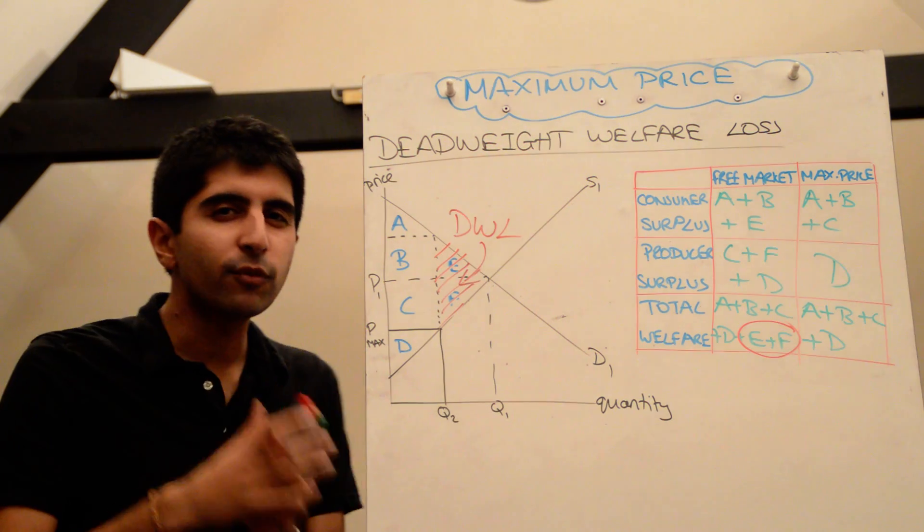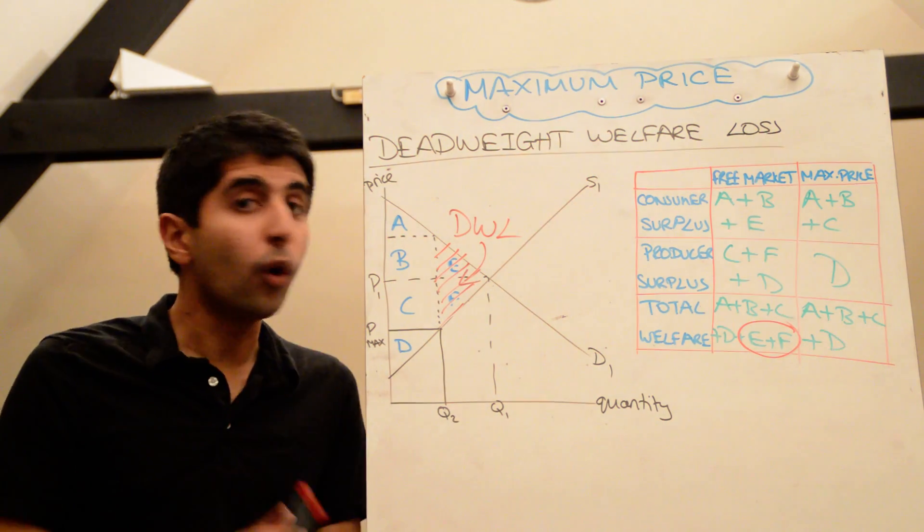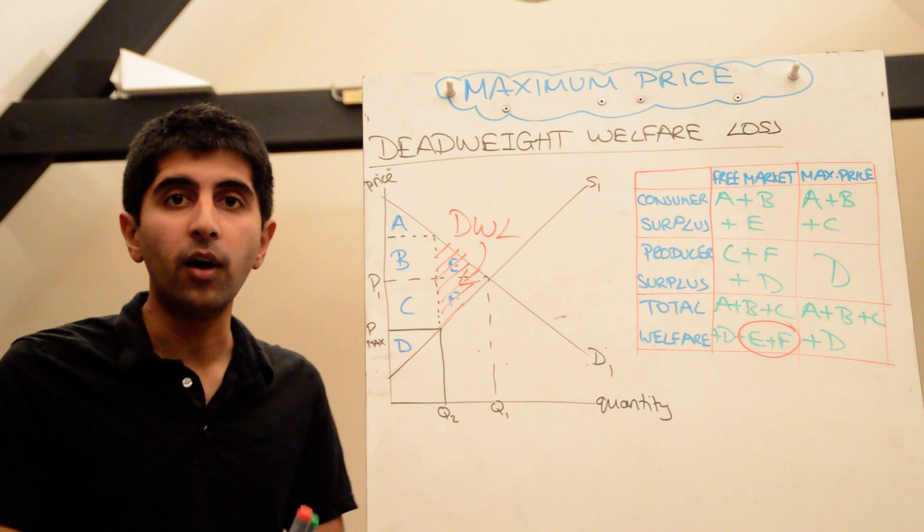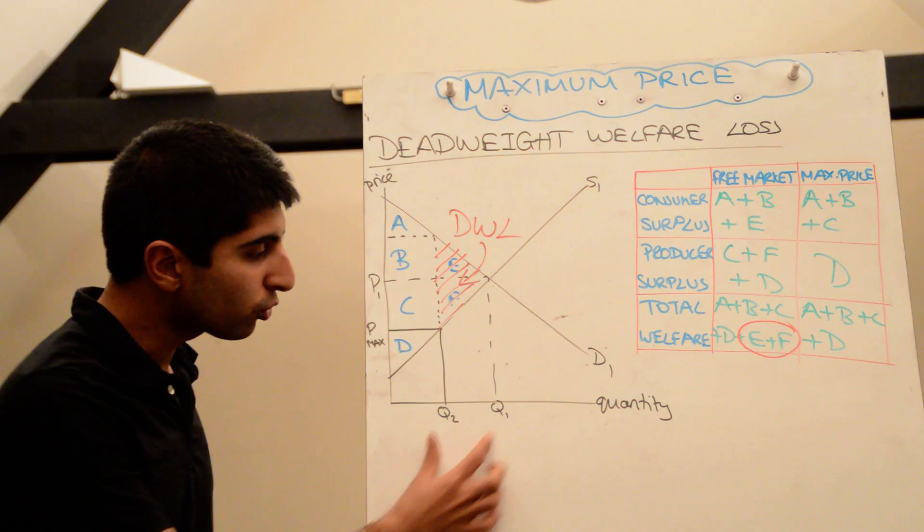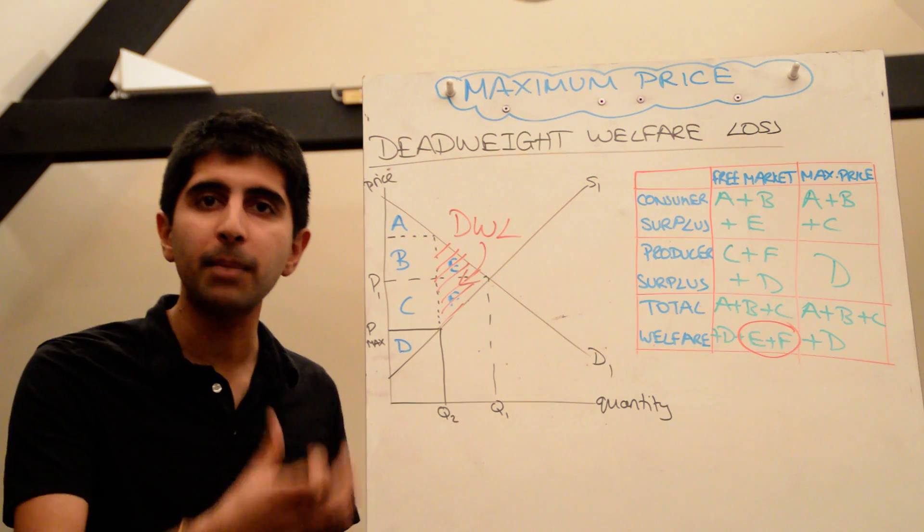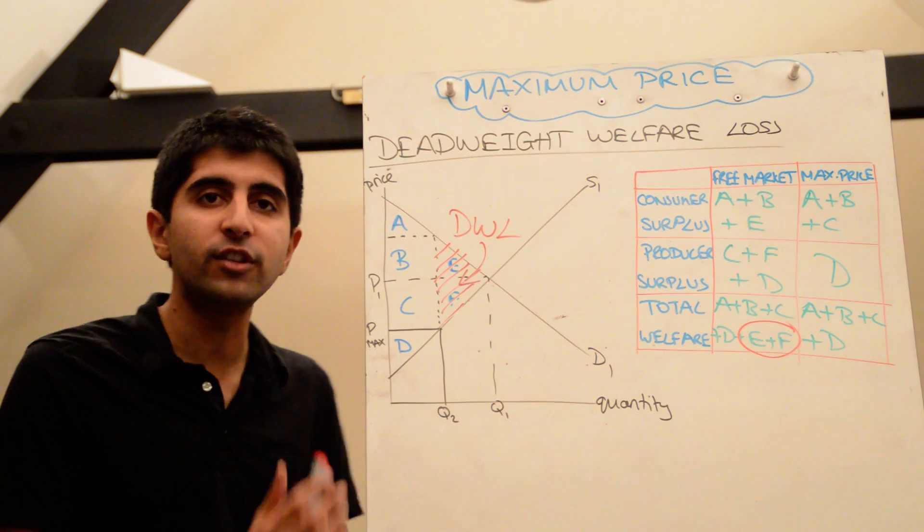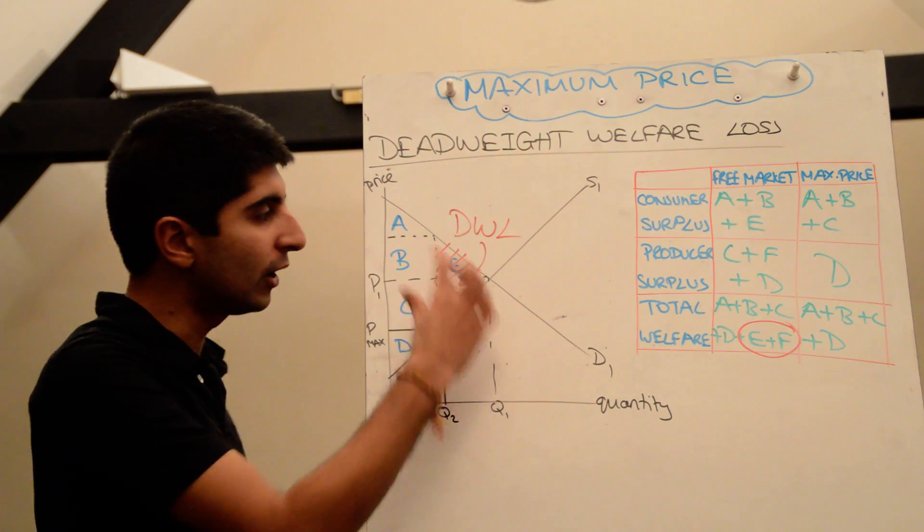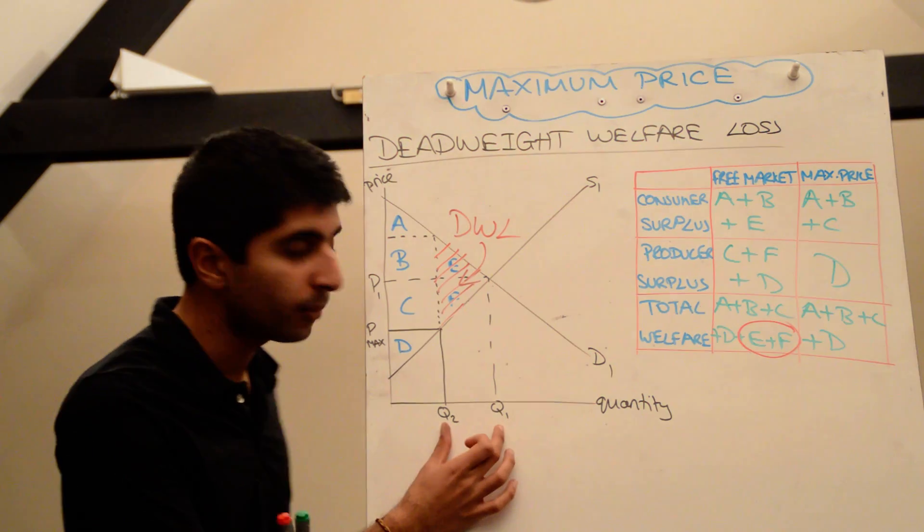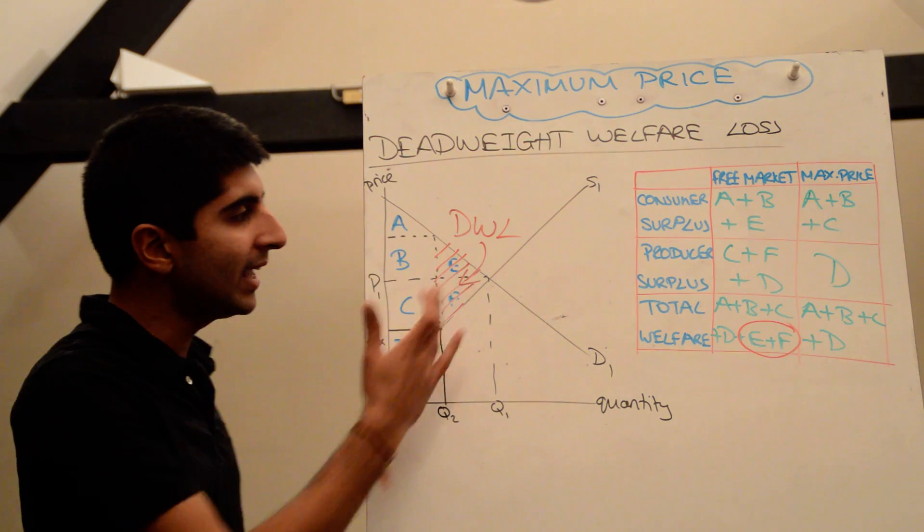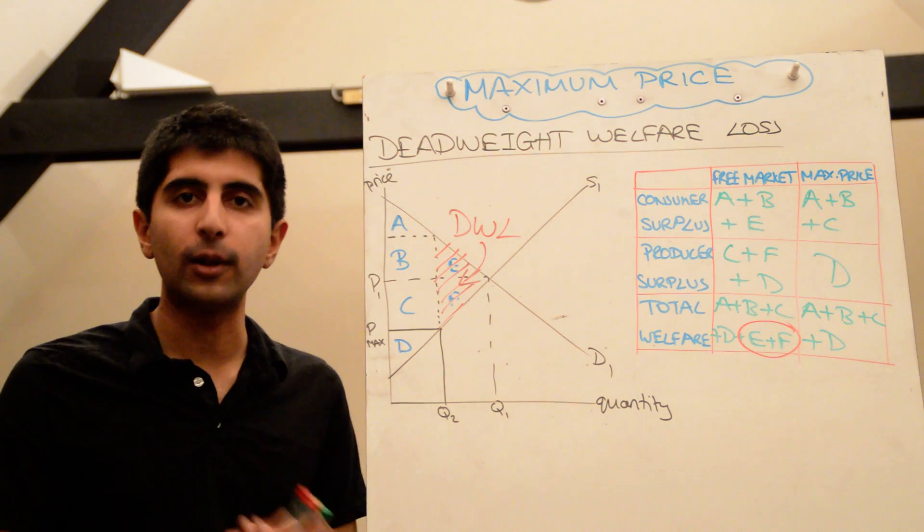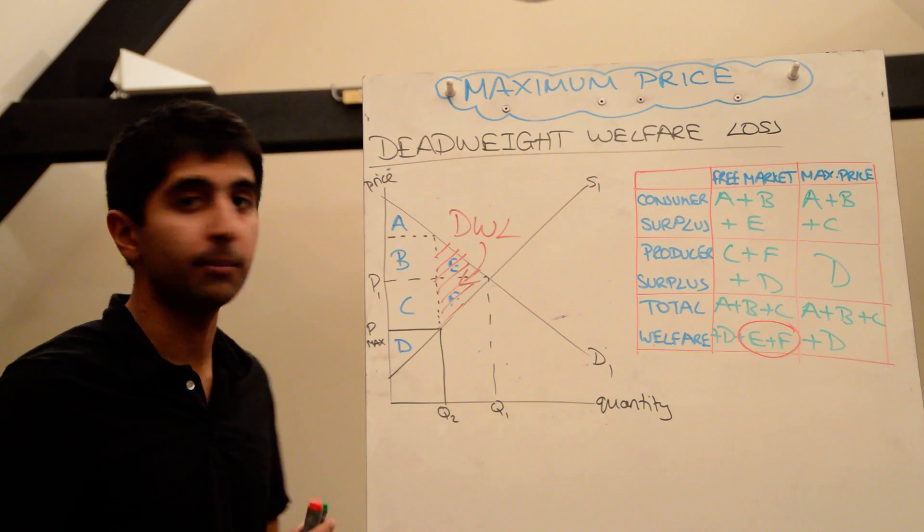These were areas of welfare that society was benefiting from before the maximum price was imposed—trades that were taking place that were adding benefit to society, that are now not taking place. Therefore society is losing out as a result. They are suffering a loss as a result of these units not being produced. Areas E and F give us the total welfare loss as a result of this maximum price being imposed.